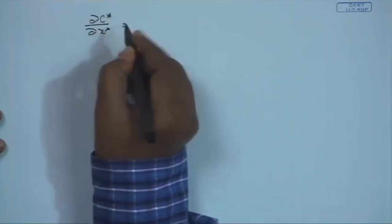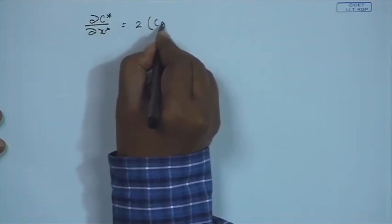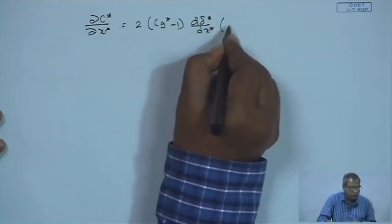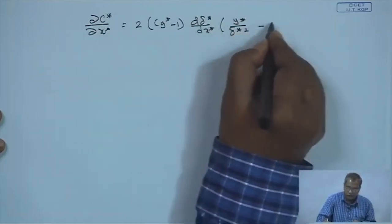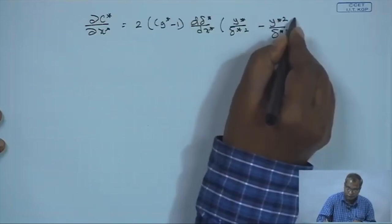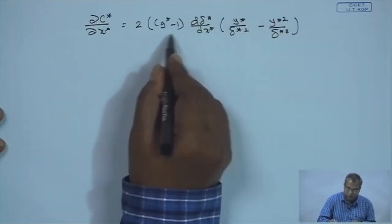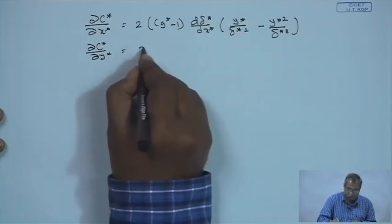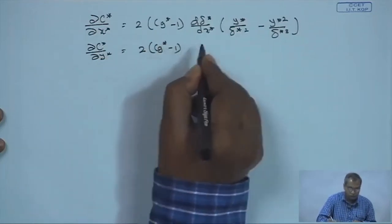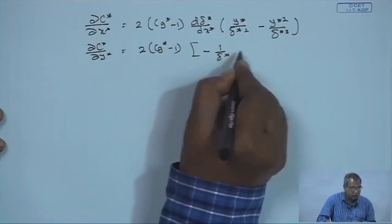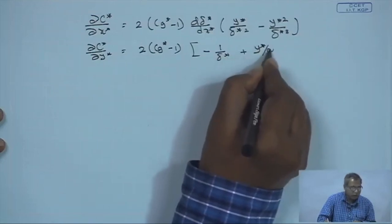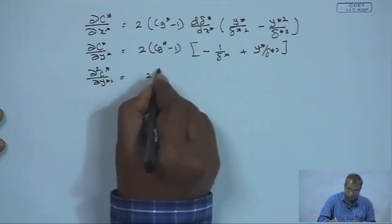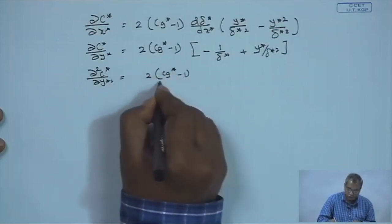So, del C* del x* will be nothing but 2C_g* minus 1, times del(delta*)/dx* times y*/delta*² minus y*²/delta*³. And del C* del y* will be 2C_g* minus 1 times (1/delta* plus y*/delta*²), and del²C*/del y*² will be 2C_g* minus 1 over delta*.